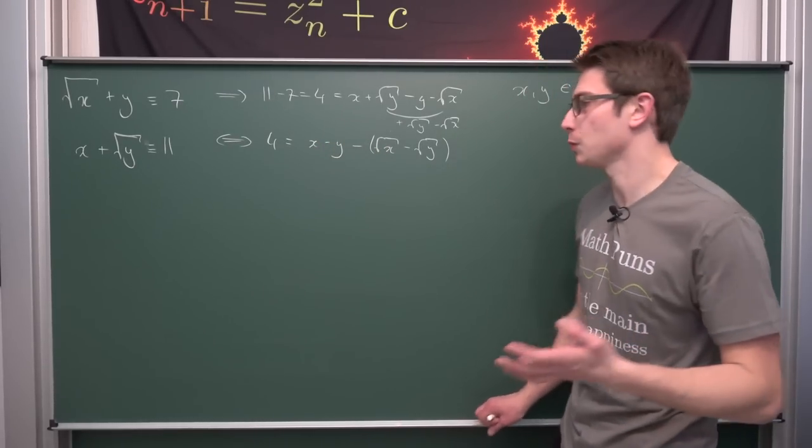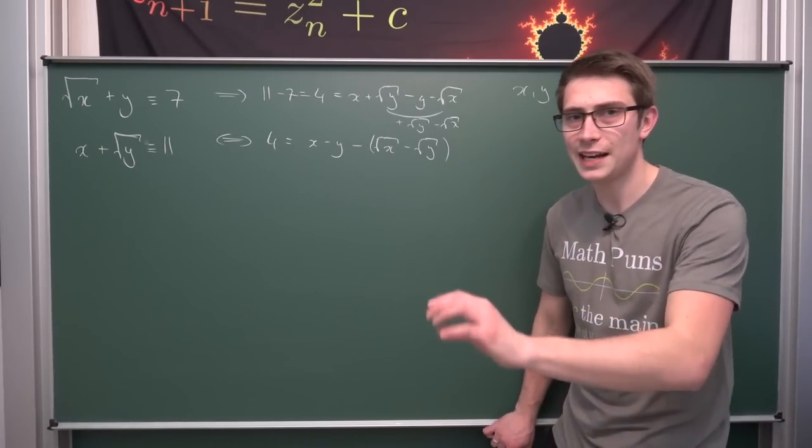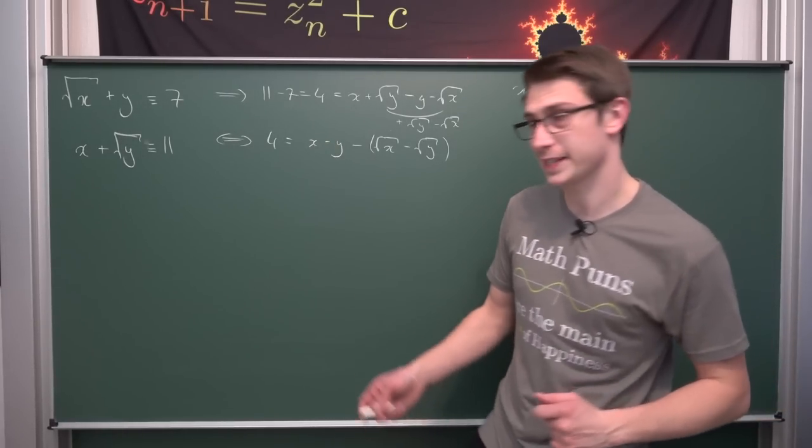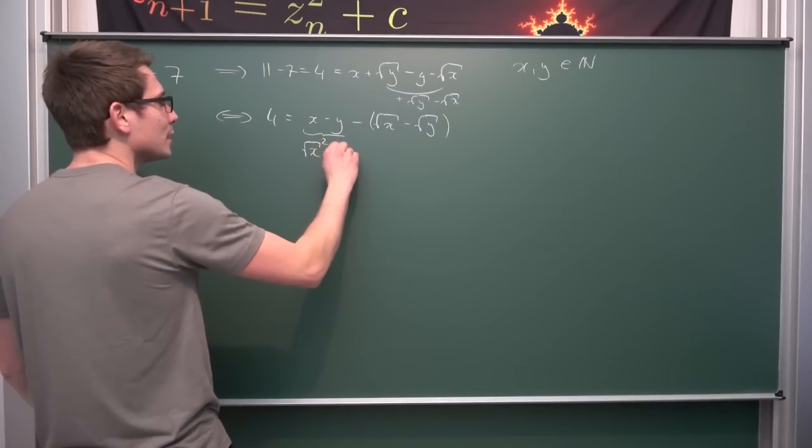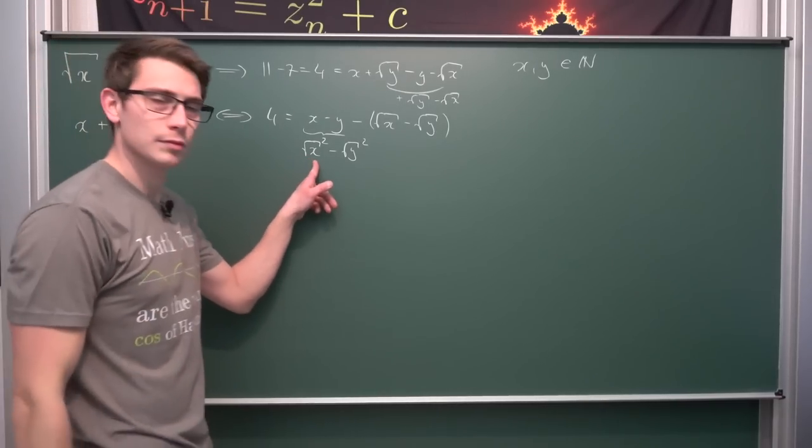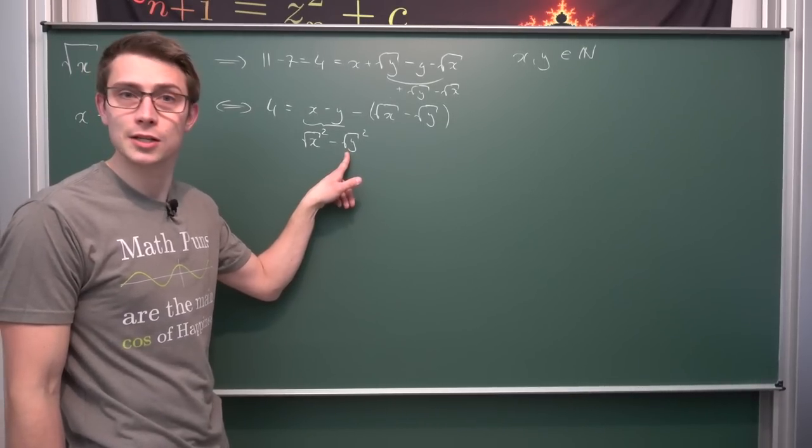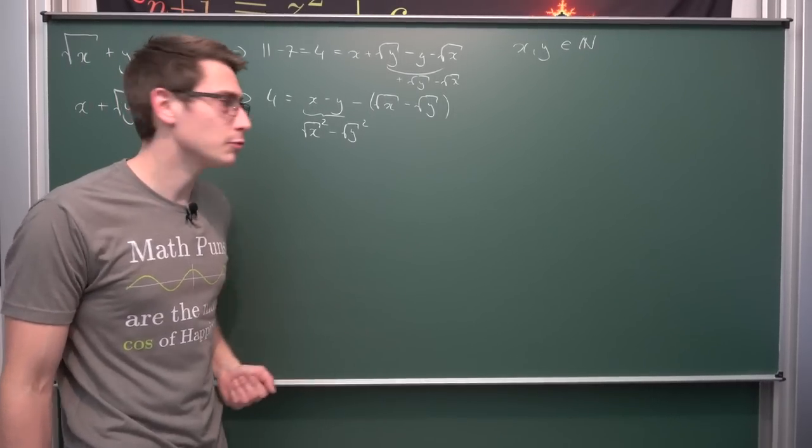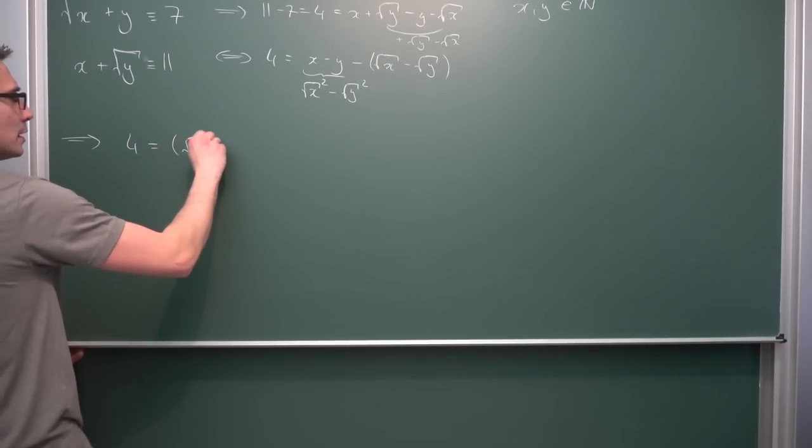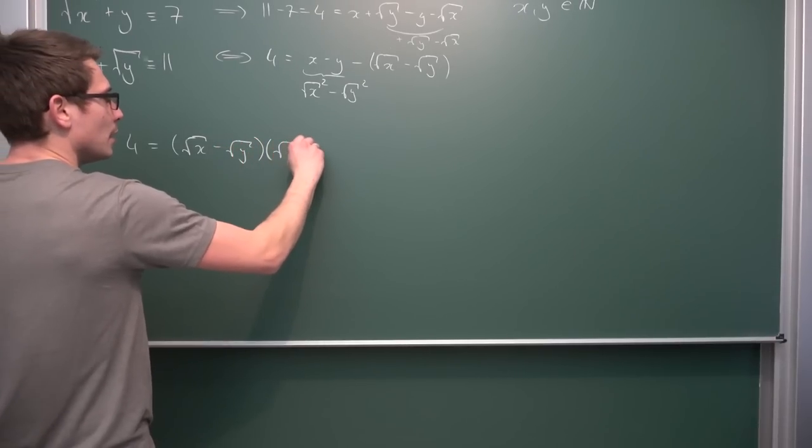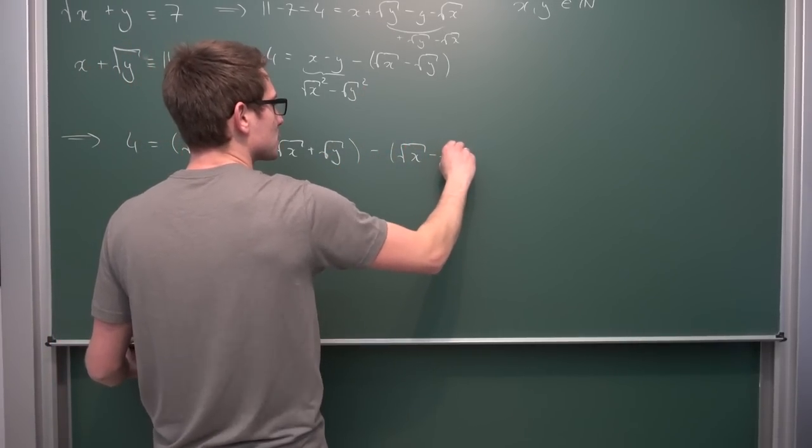If you take a look at x here, we want to bring it into the form of square root of x something. How is x connected to square root of x? The square root of x squared is the same as x. We can rewrite x and y as the square root of x squared minus the square root of y squared. This is the difference of two squares, a squared minus b squared. We can rewrite it as the square root of x minus the square root of y, times the square root of x plus the square root of y, and minus the square root of x minus the square root of y.